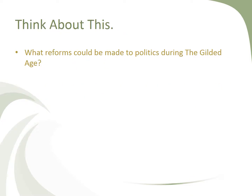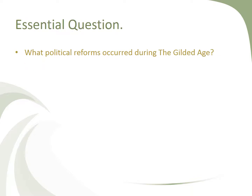Think about this: what reforms could be made to politics during the Gilded Age? You've learned about some political corruption and things that went on, so what do you think some reforms could possibly be made? And our central question: what political reforms occurred during the Gilded Age?